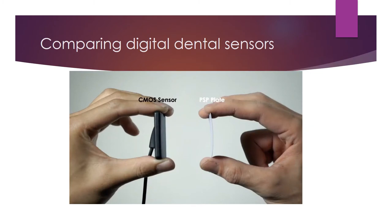Comparing both types of digital sensors commonly available: a CMOS sensor is slightly thicker and more rigid compared to a PSP plate, which is thinner, film-like, and more flexible. Nevertheless, both are very popular, have their own advantages, and are easily accepted by patients.